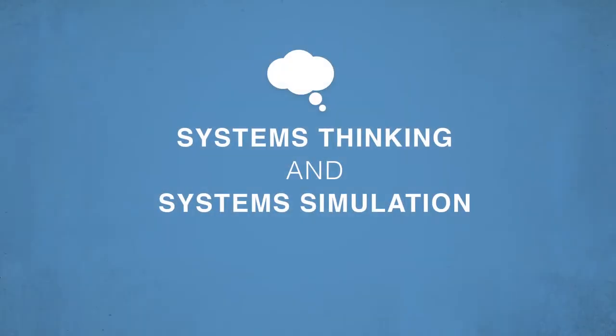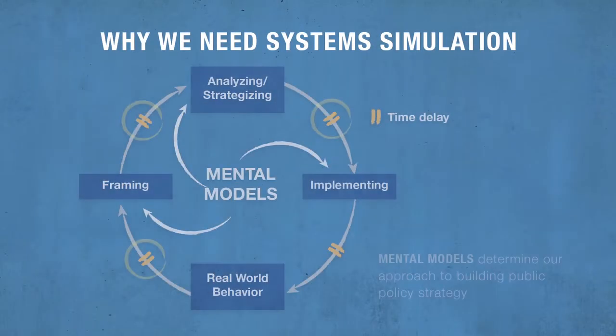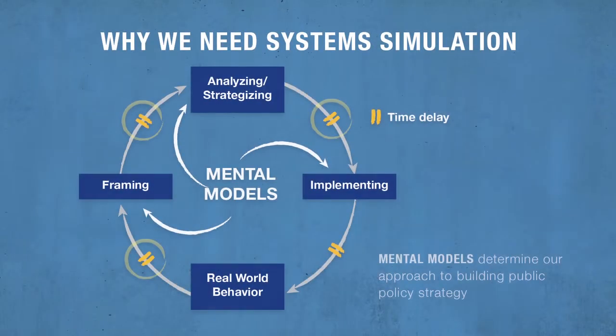Systems thinking and systems simulation can be a useful way to accomplish that, and it does so by helping us clearly identify and improve our assumptions about how the world works. In order to make sense of the complex world we live in, we all build mental models — sets of assumptions that explain how things work. We use our mental models to intervene, to take action, by first mentally simulating how our decisions will impact the future and how they will unfold over time, then we choose how to act.